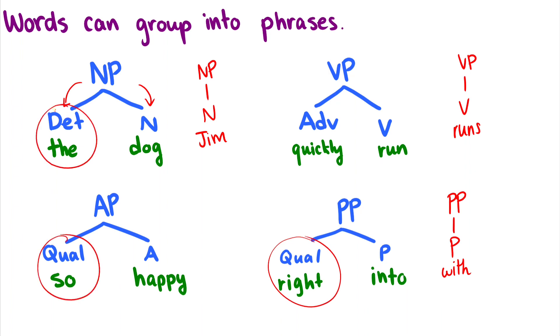The point is that we don't necessarily need what we'll call specifiers on the left, or these functional categories, in our phrases. If you have any questions about this video, please leave them in the comments below and I'll get to them as quickly as I can.